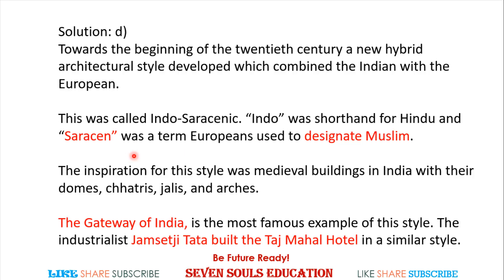Europeans used the term 'Saracen,' although it designated Muslims. Indo-Saracenic architecture's inspiration came from medieval buildings in India with domes, chhatris, jalis, and arches. The Gateway of India is the best example of Indo-Saracenic architecture. The Taj Mahal Hotel built by Jamsetji Tata is also built in a similar style.